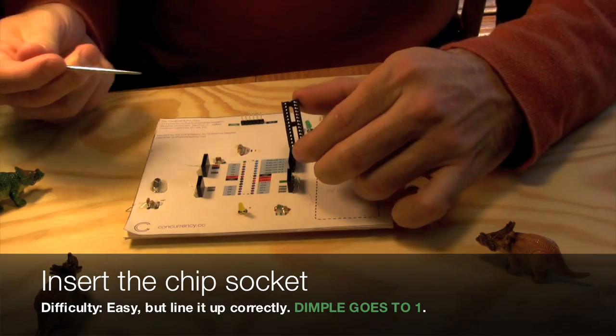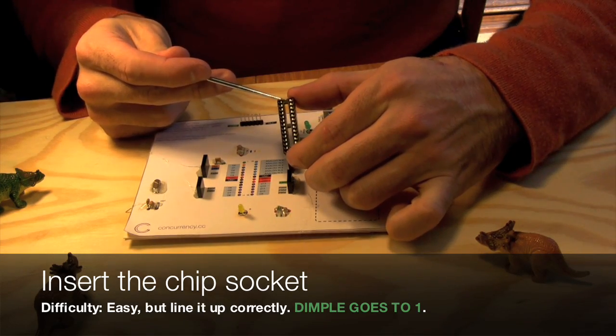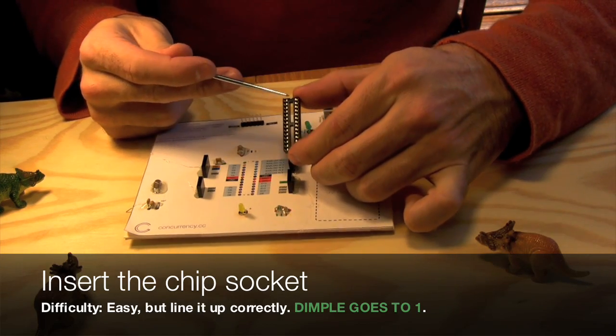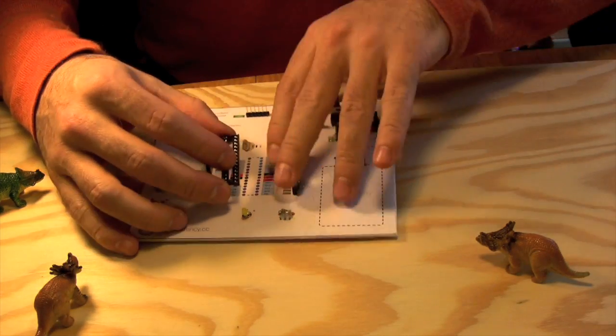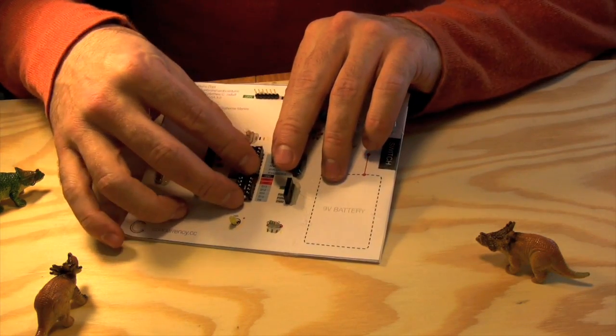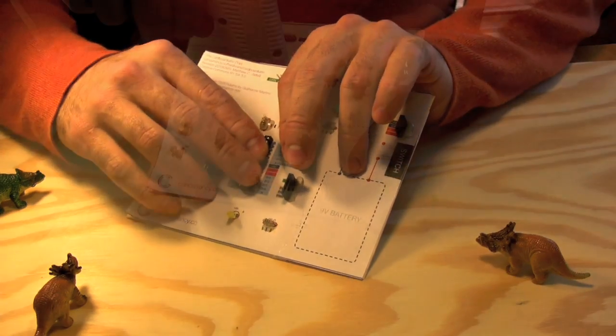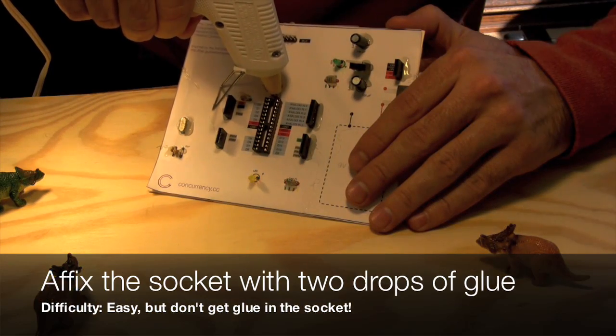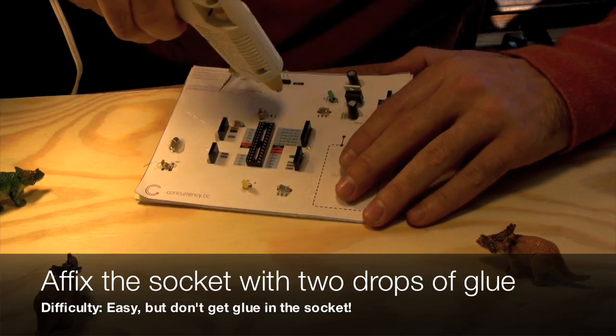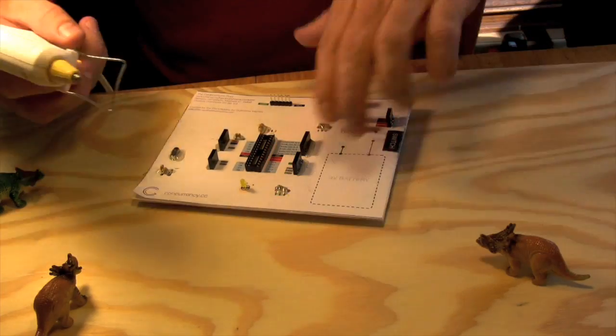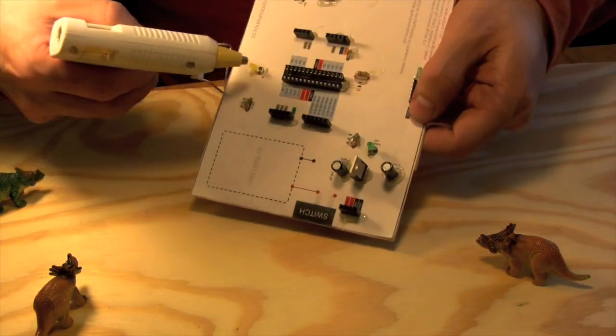The chip socket is what will hold the processor for our tiny computer. Notice there's a little nibble at one end? That's going to go up by pin 1. Be very careful when inserting it. The legs are not very strong, so you want to make sure they line up nicely with the holes. Put a spot of hot glue at either end of the socket to hold it in place, but be very careful not to get any inside of the pin holes.